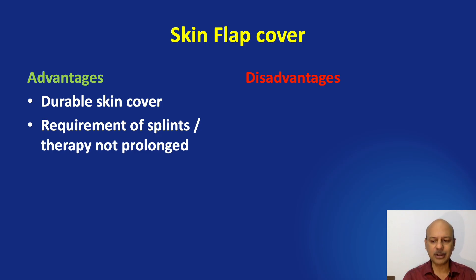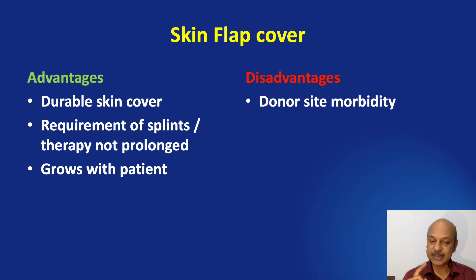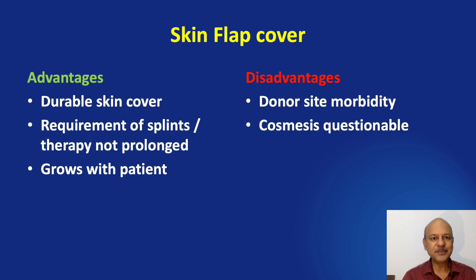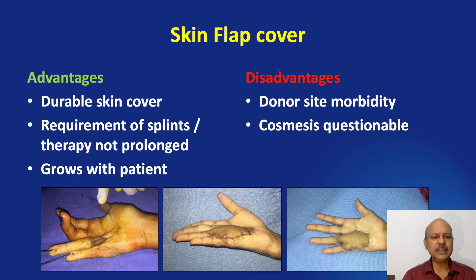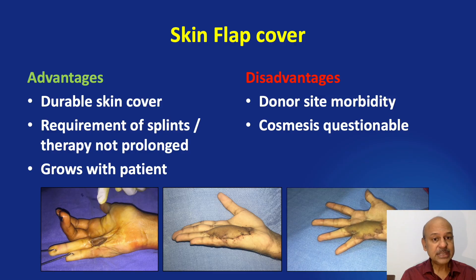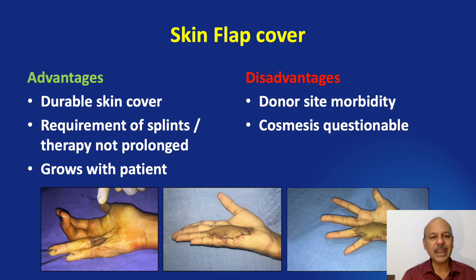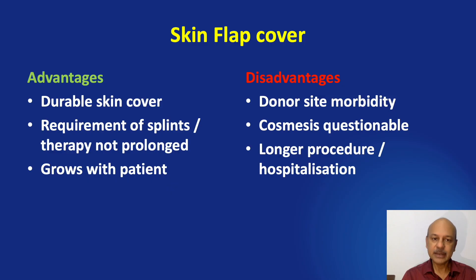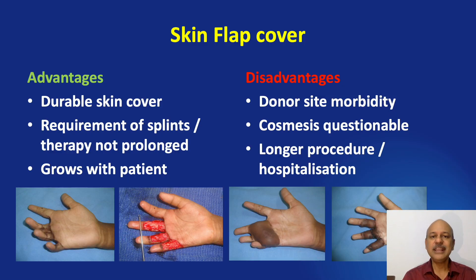After flaps, you do require splints or therapy, but it is not prolonged. And it grows with the patient. The disadvantages of course are donor site morbidity and cosmesis is questionable. Look at this example — this was a full thickness graft done three years earlier. This child is around 11 years old now and she has got a good functioning hand, but the cosmesis is not very adequate. A flap also involves a longer procedure and hospitalization, with the flap division and stages of syntactic release if it involves the fingers.